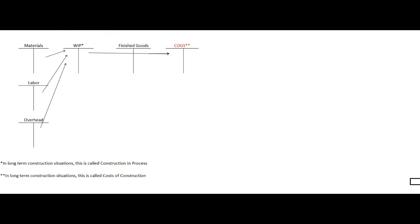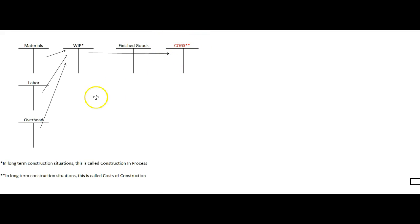The work in process account is called construction in process, and cost of goods sold is called cost of construction in the construction business. These are all balance sheet accounts, and the only income statement account is cost of goods sold, which is an expense account.